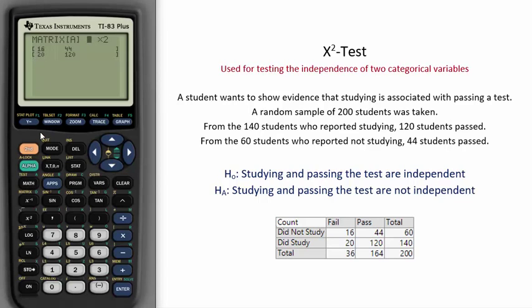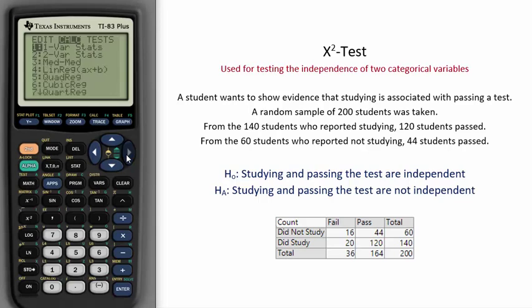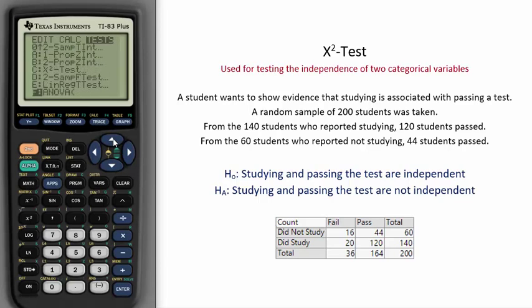Go ahead and hit 2nd, then quit to leave the screen. Now we can do the Chi-squared test of independence. Go to stat, over to tests, and this time go up to Chi-squared test of independence.